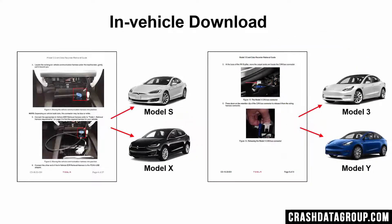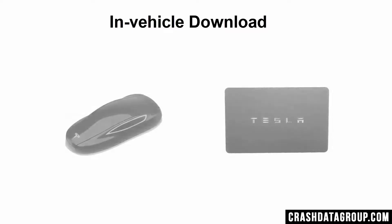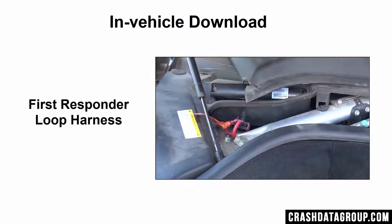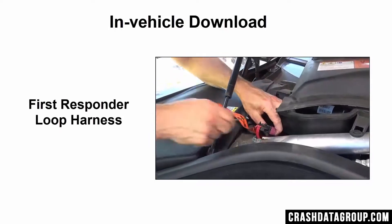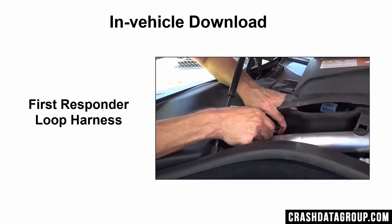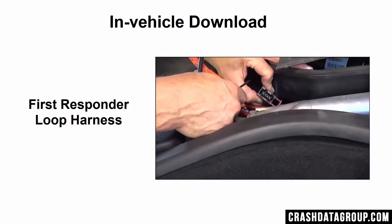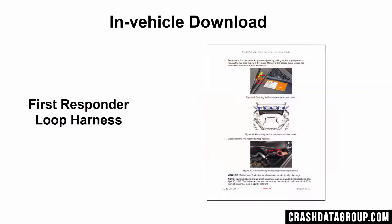For an in-vehicle download, locate the data connection port in the vehicle with the assistance of the download instruction guides. You will need to power up the car's electrical system, which requires the key fob or key card for the vehicle. If you don't have the key fob or key card, you can provide an alternate 12-volt power source directly to the RCM through the first responder loop harness and still perform an in-vehicle download. Instructions for this procedure are contained in the download instruction guides and are not covered in this video.